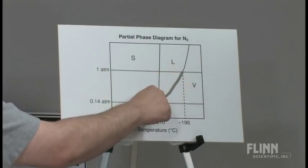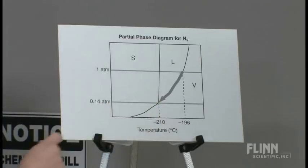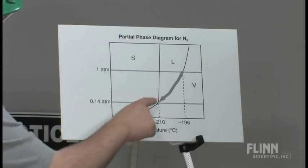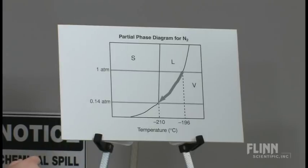And ultimately, we get to this point where we have the triple point where nitrogen can exist as a liquid, a gas, and, as we can see, a solid.